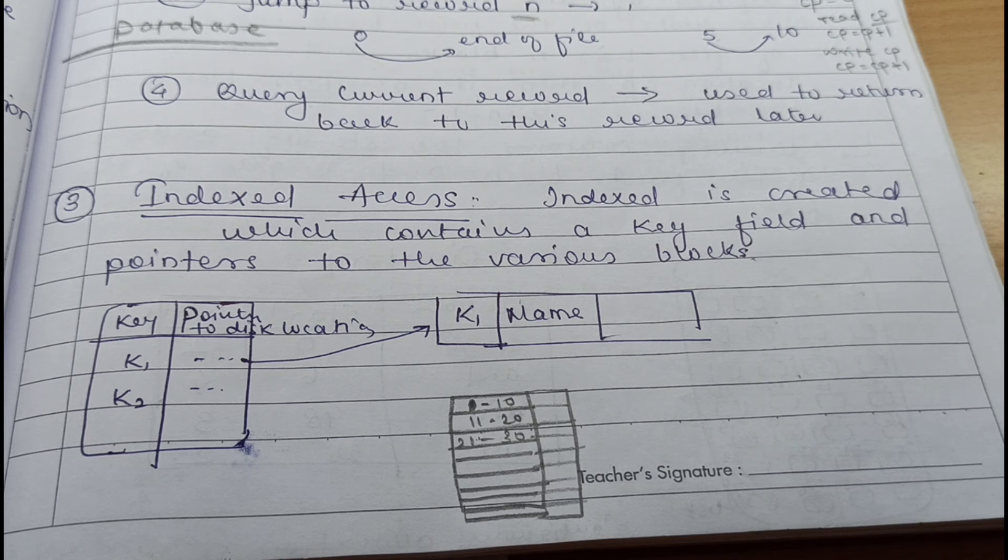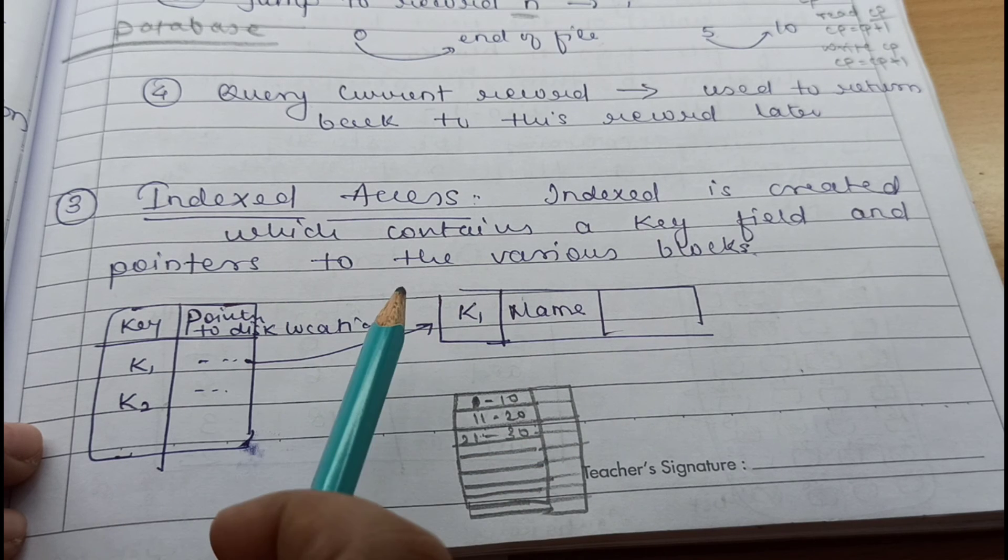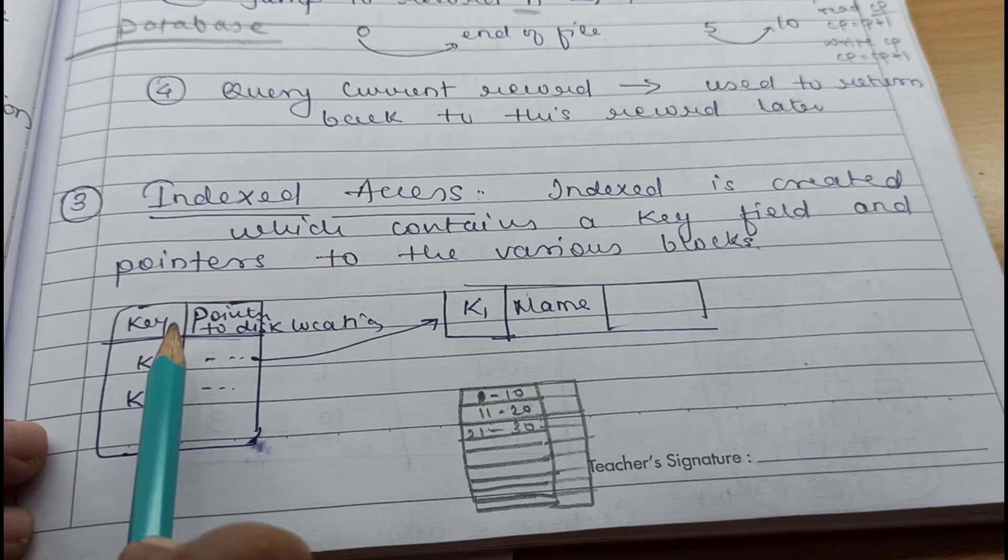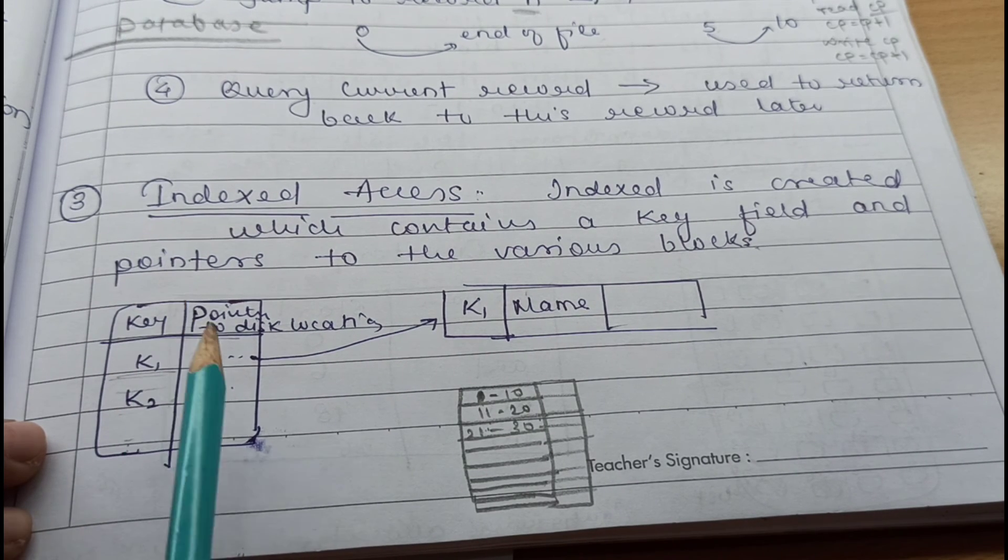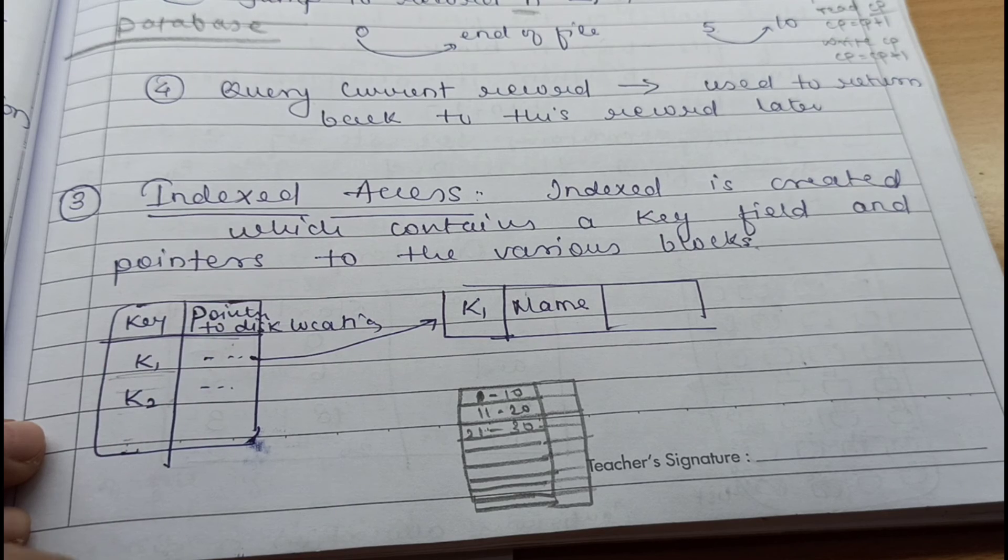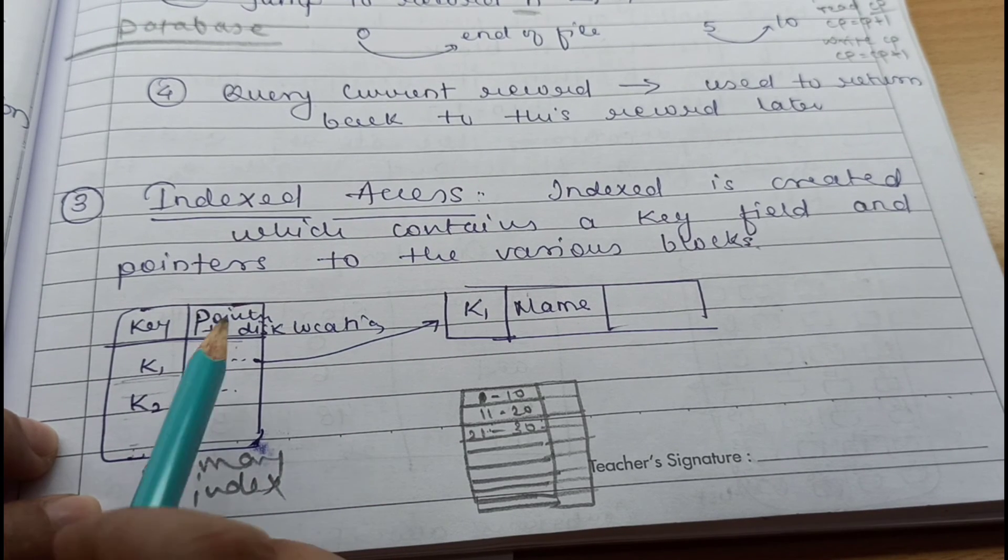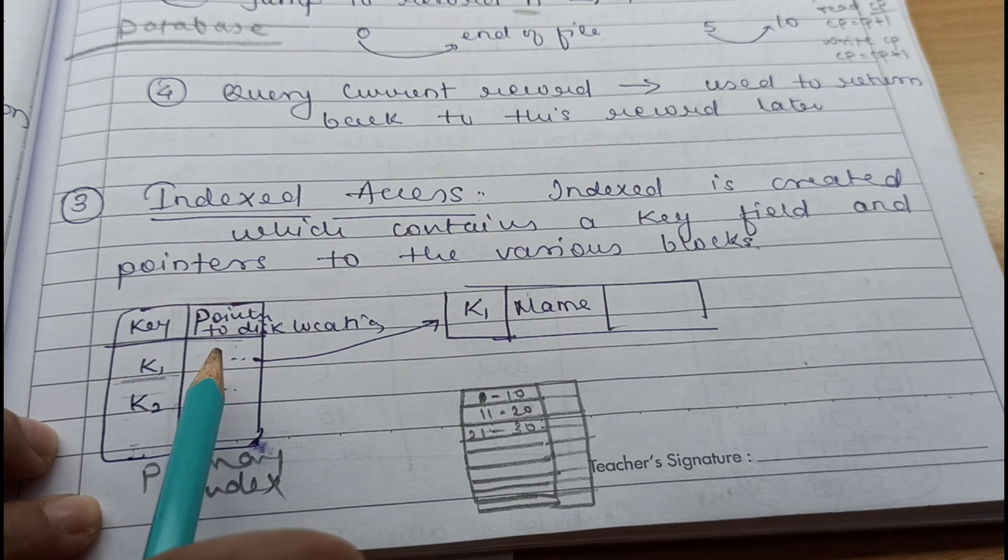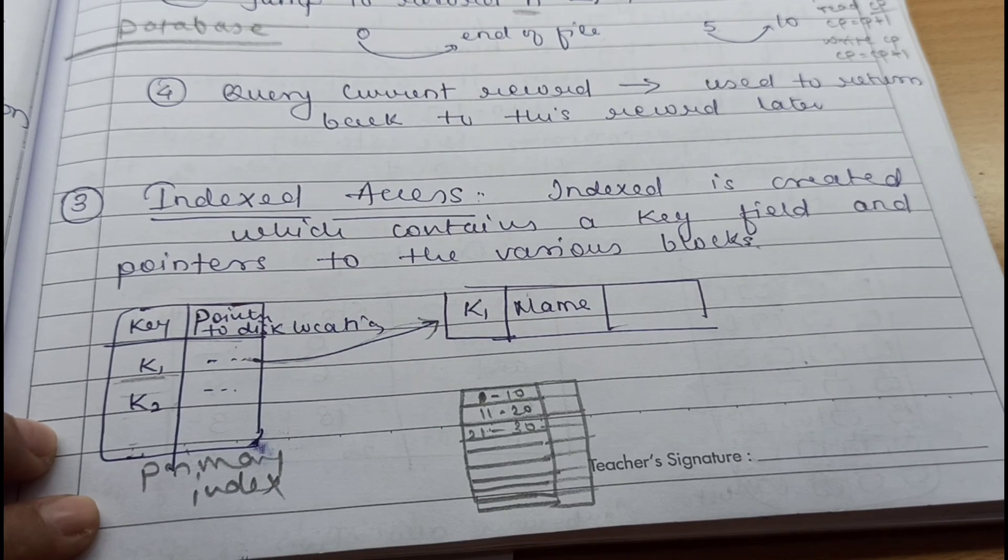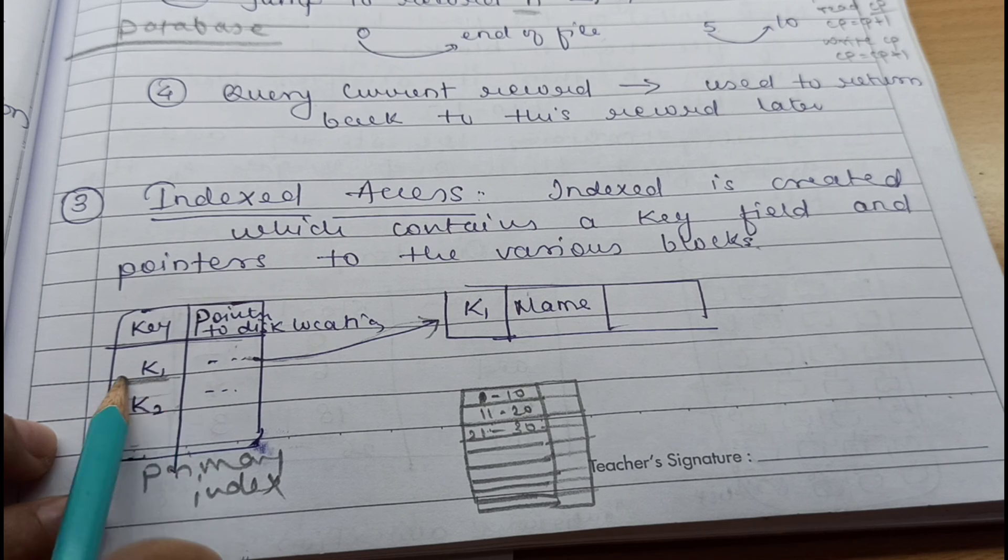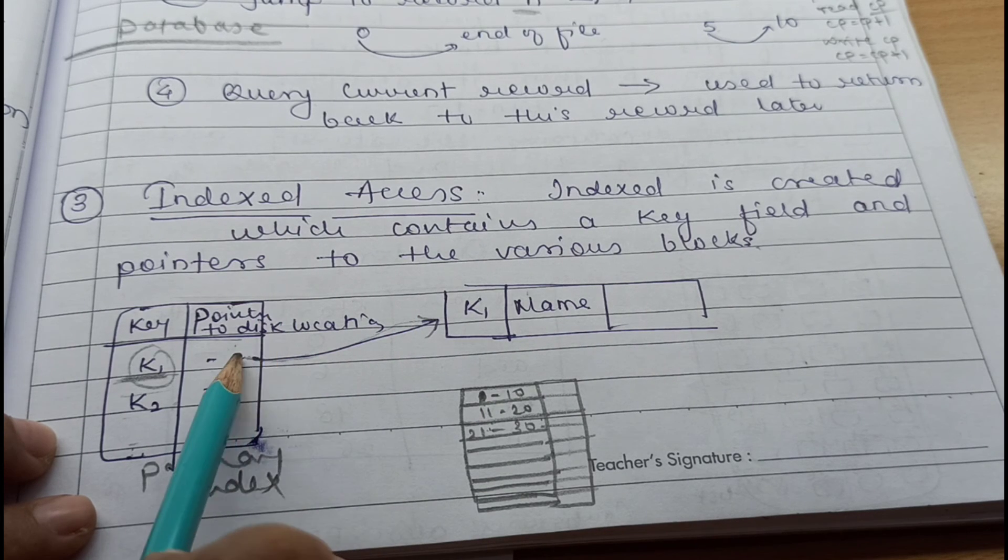In indexed access, an index is created which contains key fields and pointers to various blocks. There is a key - just assume these are the topics that are there inside the file. The second entry in the index stores where the pointer is pointing, the location where this key record is stored. The record which has the key K1 is stored and its related information - through this pointer we will get it.